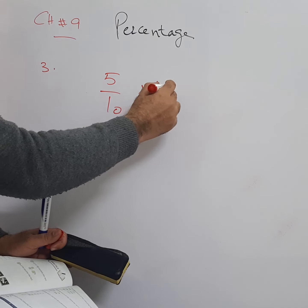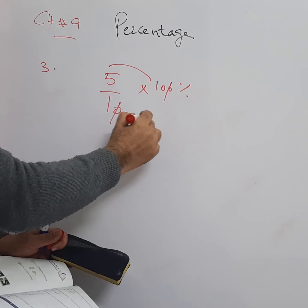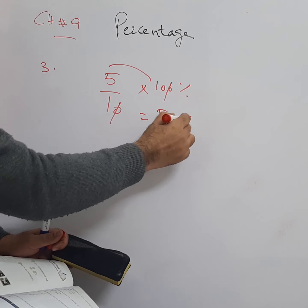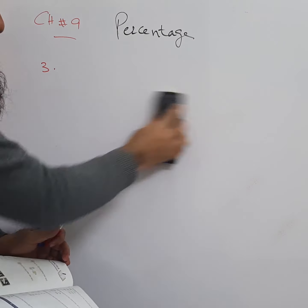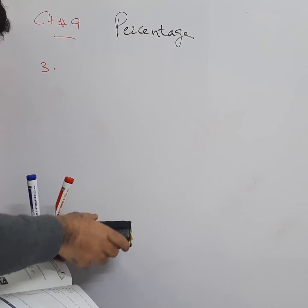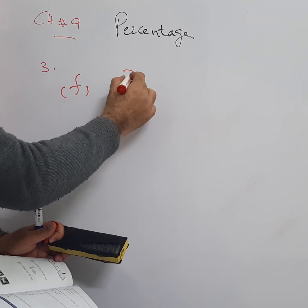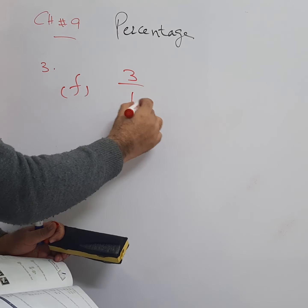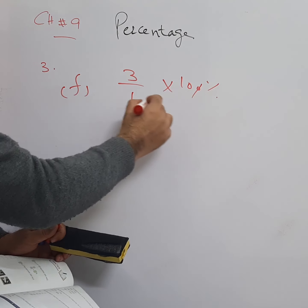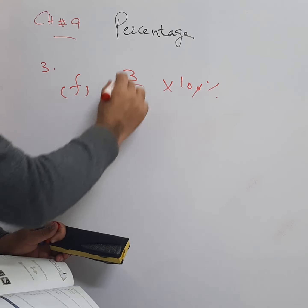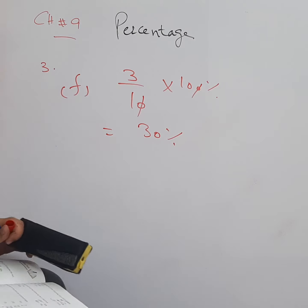For part e, 5 over 10 multiplied by 100 percent — the 10 cancels — giving 5 into 10 equals 50, so 50 percent is the answer for part e. Then part f: 3 over 10 multiplied by 100 percent, the 10 cancels, giving 3 into 10 equals 30, so 30 percent is the answer for part f.